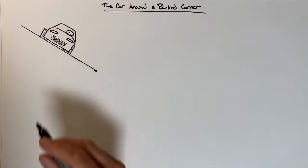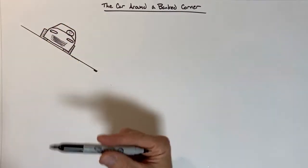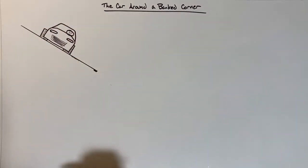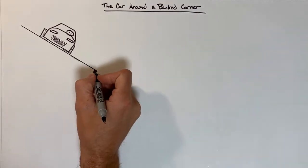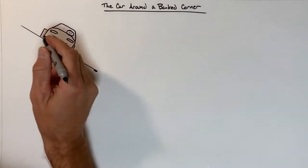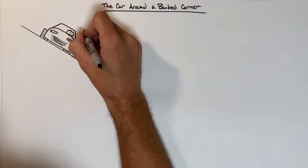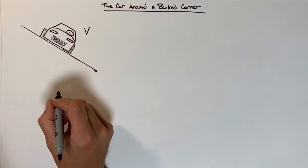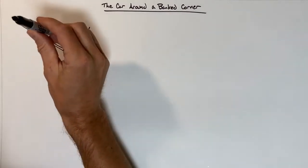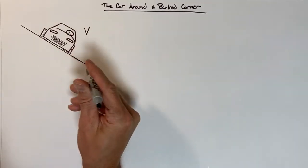In this problem, we've got a car that's driving around a banked corner. This could be on a racetrack or on-ramp to a highway or something like that. It's coming towards us at some velocity v, always traveling at the same velocity v. In this case, the way this has been drawn, that's going to be out of the page.